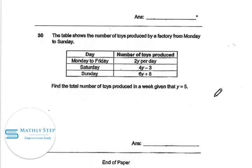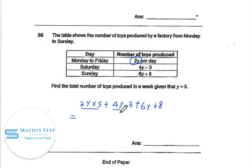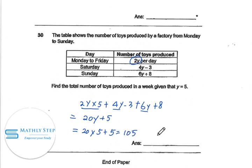Question 30. The table below shows the number of toys produced by a factory from Monday to Sunday. Find the total number of toys produced in the week, given that y equals 5. From Monday to Friday, there are 5 days and each day produced 2y, so the total is 2y times 5, plus Saturday: 4y minus 3, plus Sunday: 6y plus 8. That gives 20y plus 4y plus 6y, total 30y, minus 3 plus 8, plus 5. Plugging in y equals 5, the answer is 105 toys produced in the week.